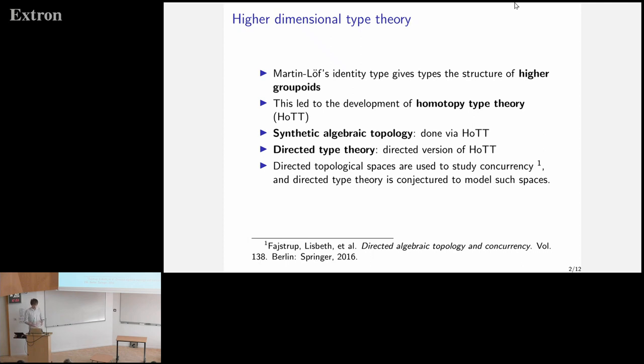But you can also do other stuff. So in Homotopy type theory, the identity type is always symmetrical. So if you have A equals B, then you also have B equals A. You can also not have this. And then you have a notion of directed type theory, where the identity type is not required to be symmetrical. And these entities have already been studied and have been used to study concurrency and to model concurrent programs.